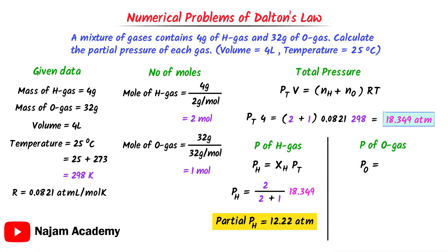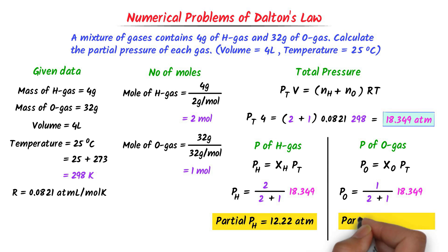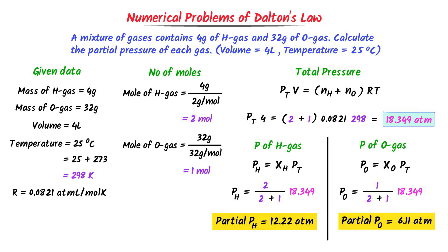The partial pressure of oxygen gas is equal to the mole fraction of oxygen gas times total pressure: P_O₂ = (1 / 3) × 18.349. After calculation, I get 6.11 atm. Hence, the partial pressure of hydrogen gas is 12.22 atm and the partial pressure of oxygen gas is 6.11 atm. If we add the partial pressures of hydrogen gas and oxygen gas, we get the total pressure of 18.349 atm. Note down this important numerical problem.